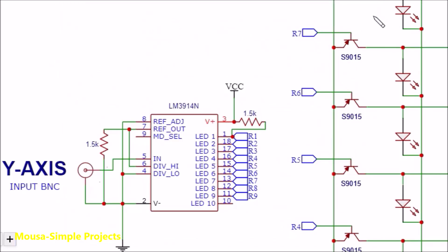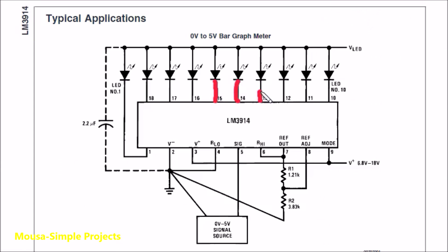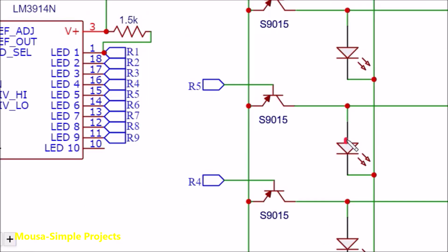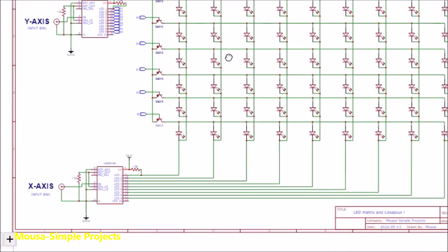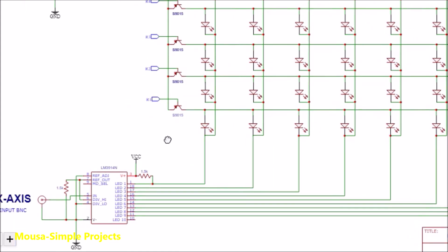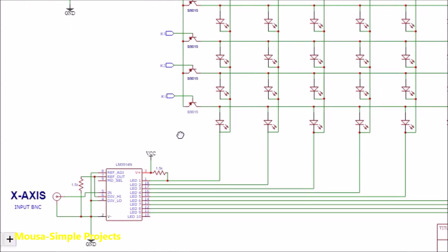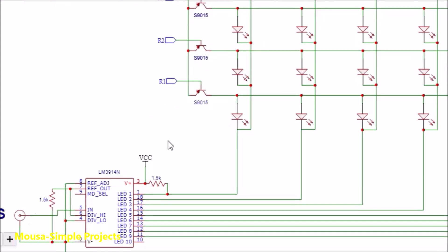However, for the y-axis, we have to use some switching transistors, because this IC is designed to drive the cathode of the LEDs, but in the y-axis we have the anode. So the PNP transistors here work just like a NOT gate. This IC has a constant current LED driver, so you don't need to use protection resistors for the LEDs.